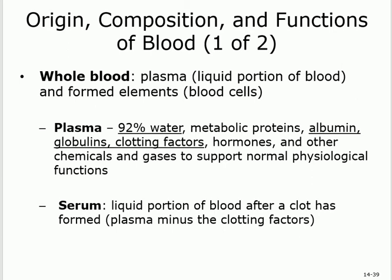The plasma consists of about 92% water. It also contains albumin (for viscosity and as a carrier), globulin (like immunoglobulins for defense and as a carrier), and clotting factors like fibrinogen. What's the difference between plasma and serum? Serum is plasma minus clotting factors — because when you take a blood sample outside the body, the clotting factors activate and form a clot, leaving only the serum.